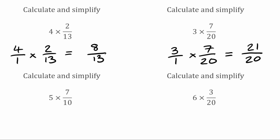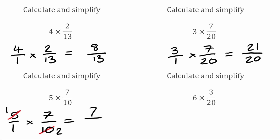For our next question, we've got 5 times 7 over 10. I'm going to write that 5 as 5 over 1, which I'm then multiplying by 7 over 10. Looking to see if we can cross-cancel: the highest common factor of 1 and 7 is 1, so we can't do anything there. But we can cancel down the 5 and 10 — the highest common factor of 5 and 10 is 5. So 5 divided by 5 gives 1, and 10 divided by 5 gives 2. Now multiplying through: 1 times 7 is 7, and 1 times 2 is 2. So this one fully simplified would be 7 over 2.